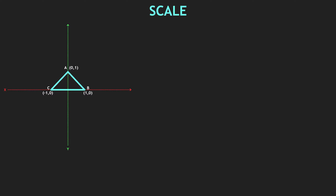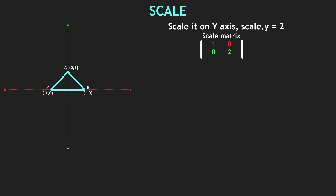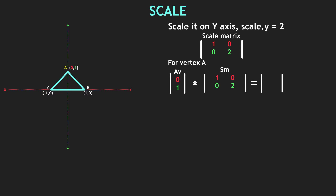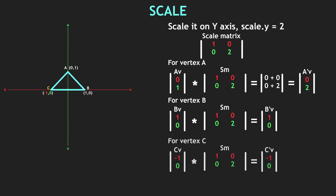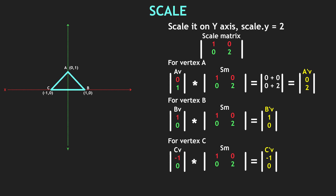Let's do that for scale. We take our triangle and want to scale it on y by 2 units. We plot a transformation matrix — let's call it the scale matrix: [[1, 0], [0, 2]]. We multiply our vector with the scale matrix to get the new vector. For vertex A: 0×1 + 1×0 = 0, and 0×0 + 1×2 = 2, giving us our new vector A. We do the same for vertex B and C, and with new A, B, and C we get our scaled triangle.